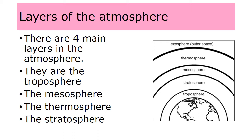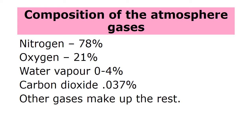Layers of the atmosphere: there are four main layers in the atmosphere — the troposphere, the mesosphere, the thermosphere, and the stratosphere. The atmosphere is made up of gases: nitrogen 78%, oxygen 21%, water vapor 0 to 4%, carbon dioxide 0.037%, and other gases make up the rest.